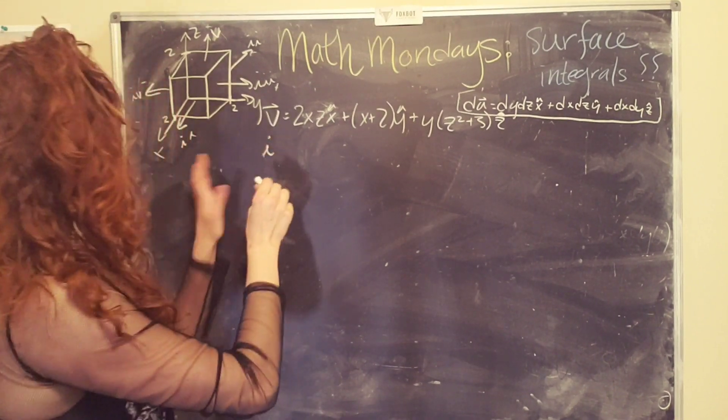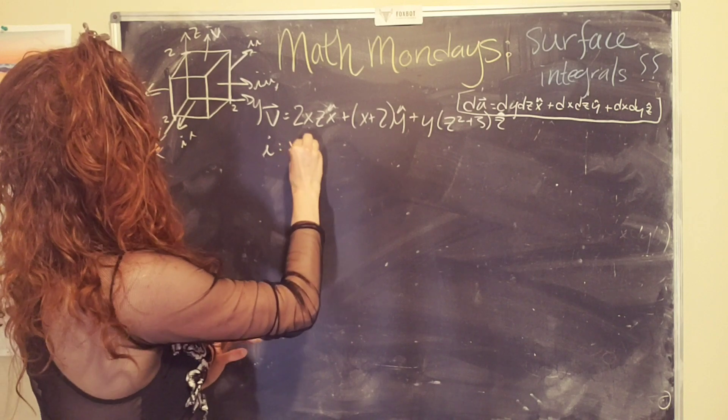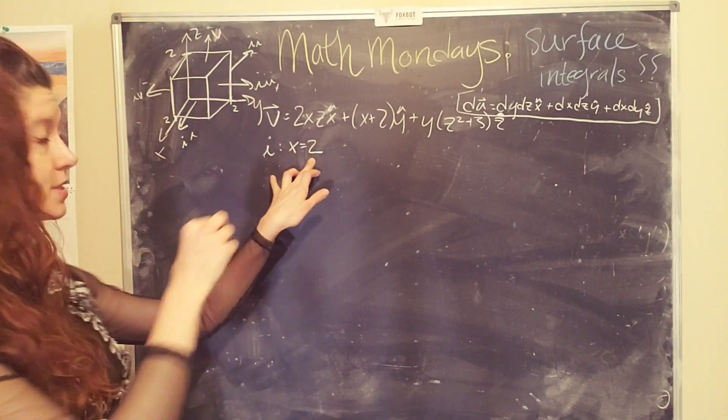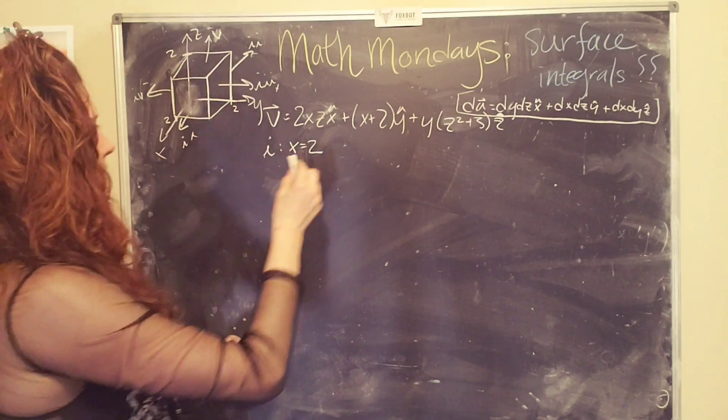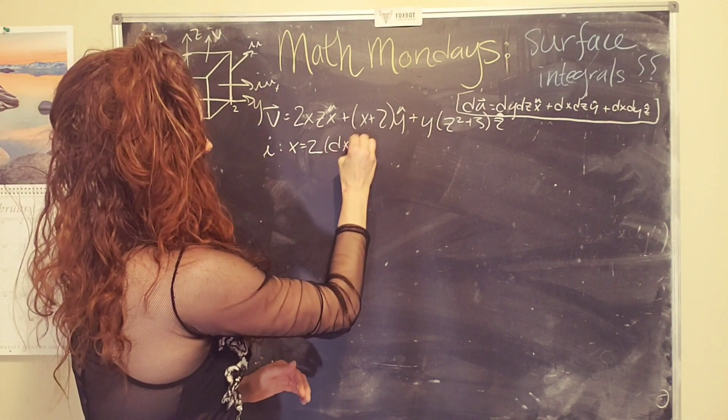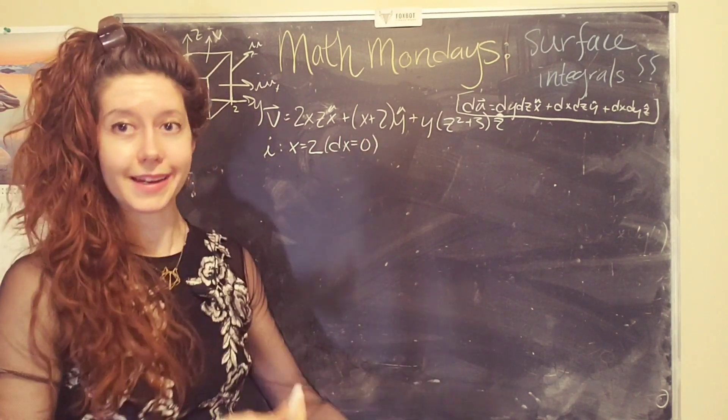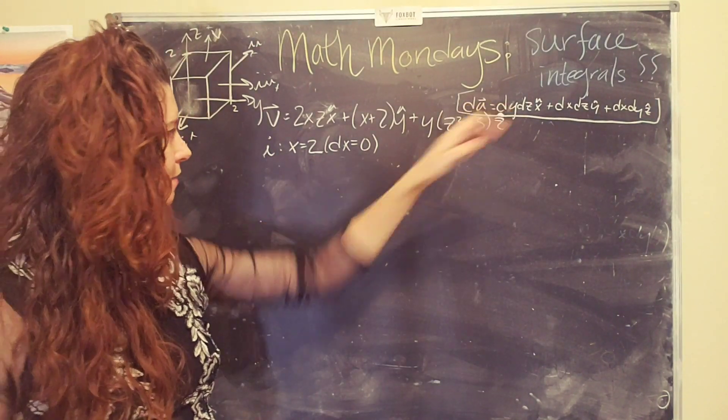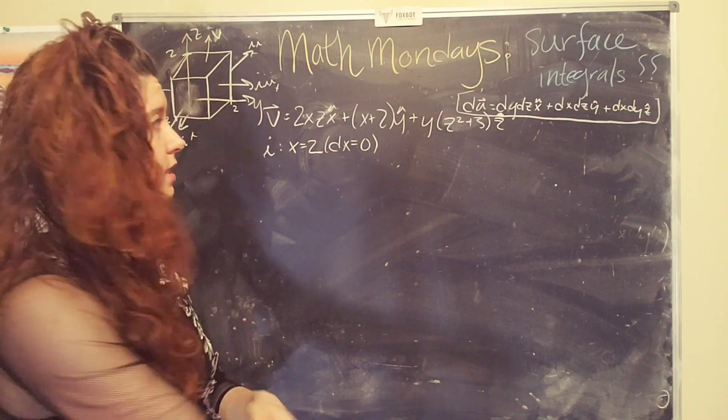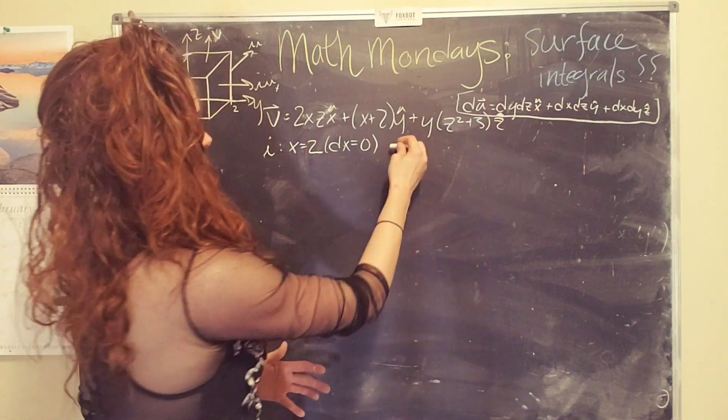So for surface number one, we have x is constant here. X is a constant two on this outer surface. And so what that tells us is that dx is zero because x is not changing. So, oh, look at that.